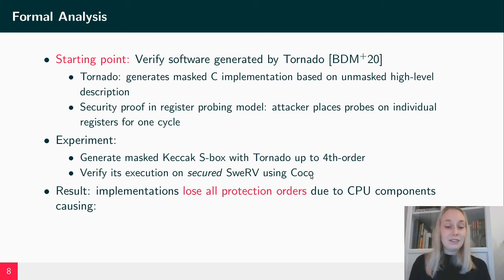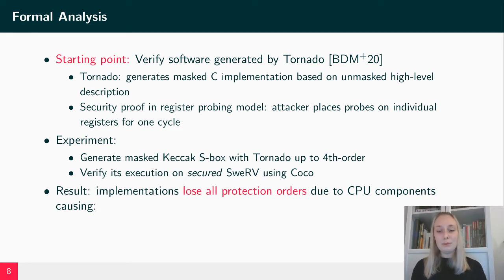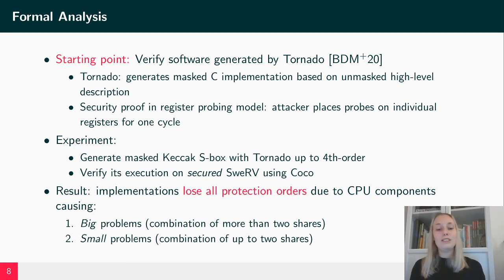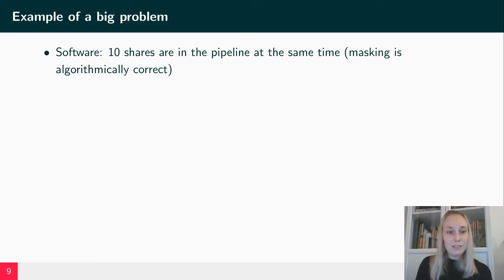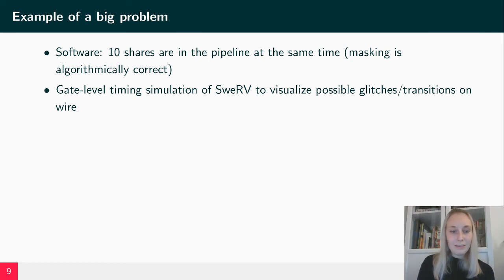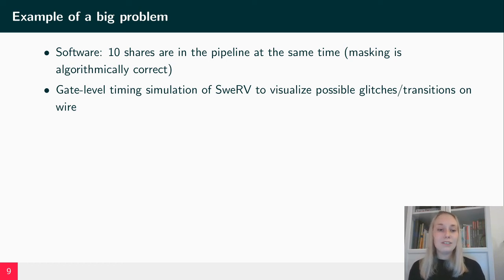The result of this verification is that the implementations lose all protection orders because there are certain components in the Swerve core causing first 'big problems' — components combining more than two shares — and 'small problems' — components which combine up to two shares. For example, we try to visualize the execution of software containing 10 shares where shares are in the pipeline at the same time due to the masking scheme. We perform a gate-level timing simulation of the Swerve core to visualize whether glitches and transitions on a specific wire in the processor's forwarding logic can lead to leaks.